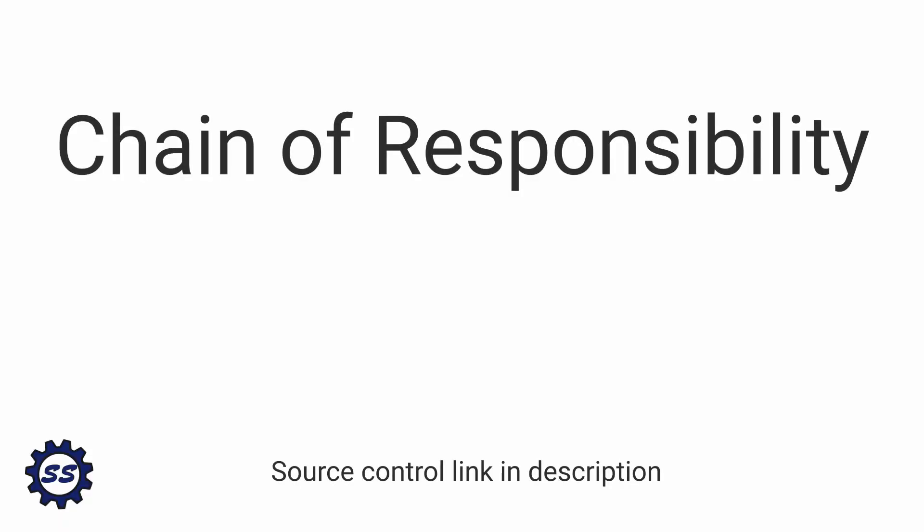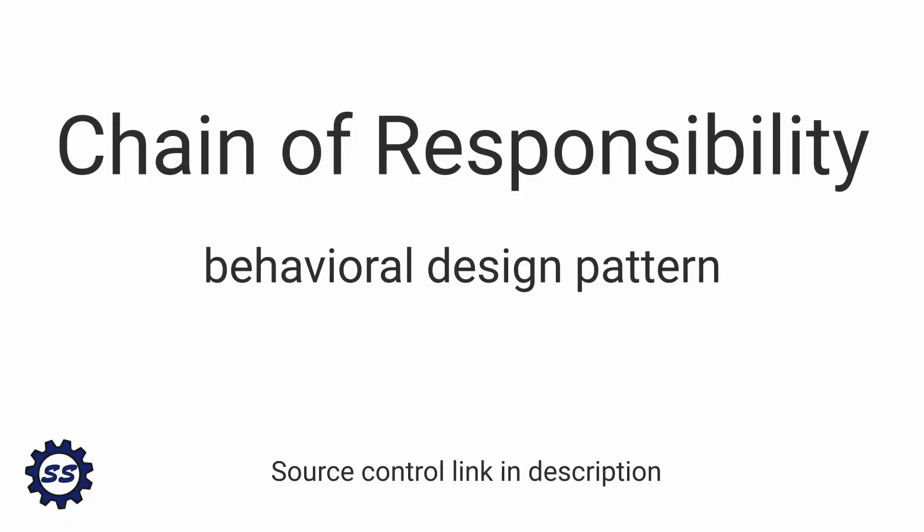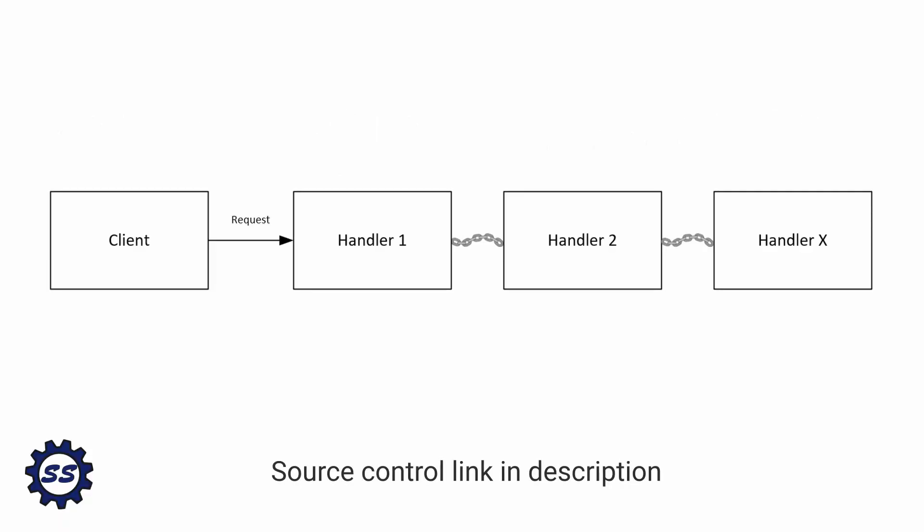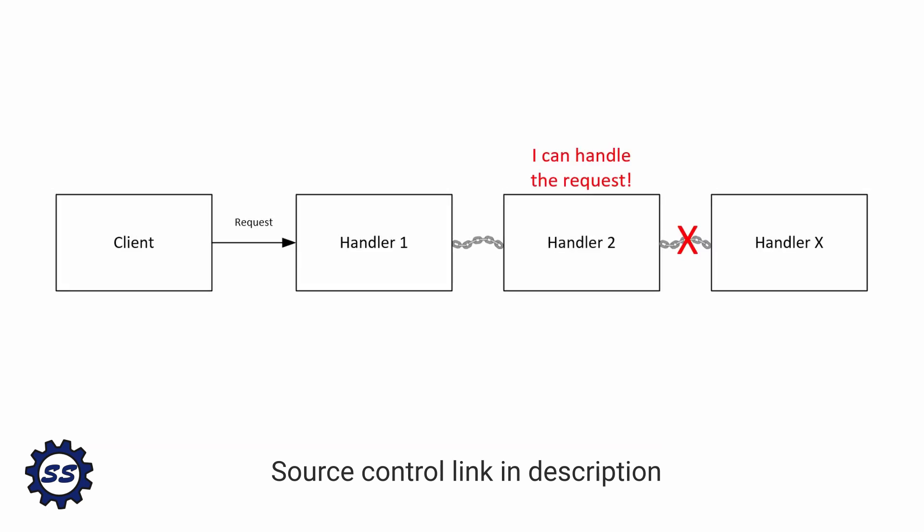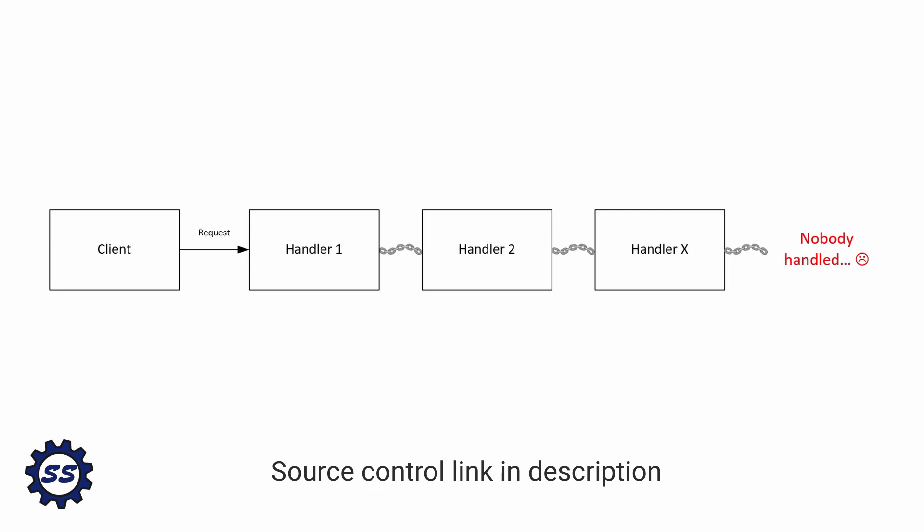The chain of responsibility pattern is a behavioral design pattern in which a client passes a request through a chain of handlers until that request eventually gets handled somewhere in the chain, or until the request reaches the end of the chain and simply doesn't get handled.